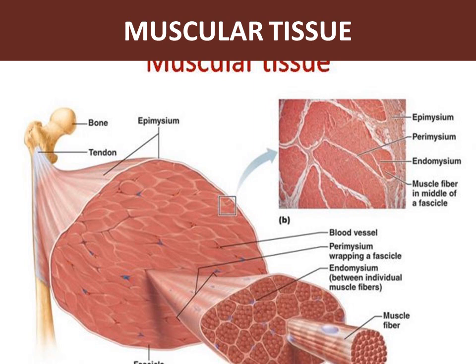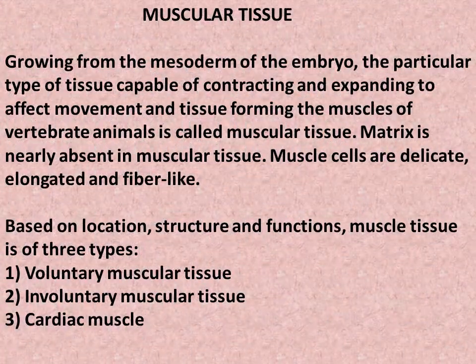This is a diagram of muscular tissue. Muscular tissue grows from the mesoderm of the embryo. It is a particular type of tissue capable of contracting and expanding to affect movement, forming the muscles of vertebrate animals. Matrix is nearly absent in muscular tissue. Muscle cells are delicate, elongated, and fiber-like. Based on location, structure, and functions, muscle tissue is of three types: 1. Voluntary muscular tissue, 2. Involuntary muscular tissue, 3. Cardiac muscle, that means heart muscle.